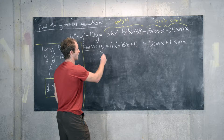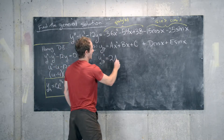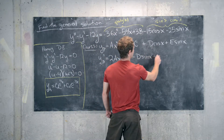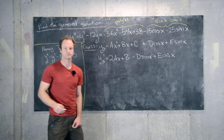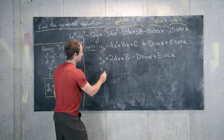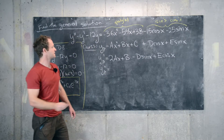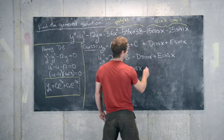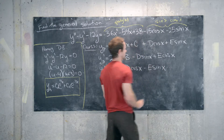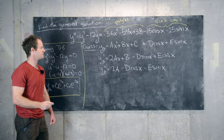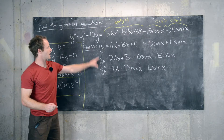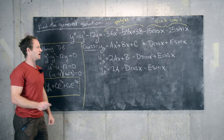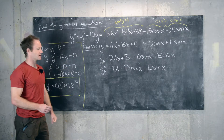The first derivative is y_p prime equals 2ax plus b minus d sine x plus e cosine x. The second derivative is y_p double prime equals 2a minus d cosine x minus e sine x, by taking the derivative of each part. Our next step is to plug y_p into the original differential equation.